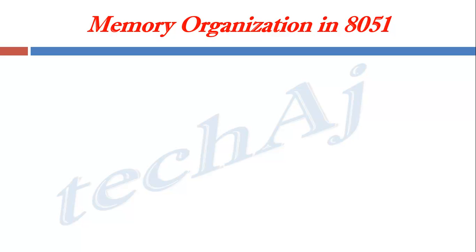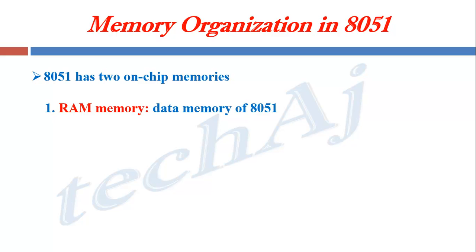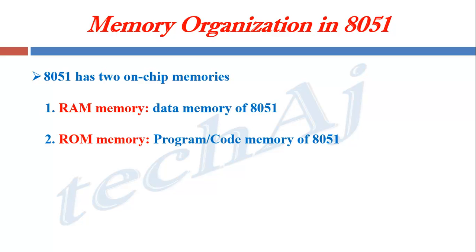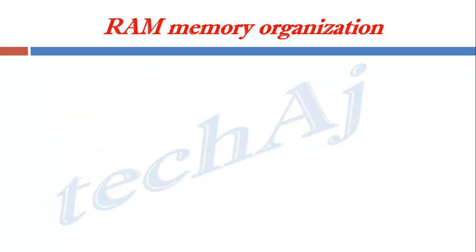In this video, we are going to discuss memory organization in 8051. The 8051 has two on-chip memories. First one is RAM memory, which is also called as the data memory of 8051. And the second one is ROM memory, which is also called as the program or code memory of 8051. First of all, we will see RAM memory organization in detail.